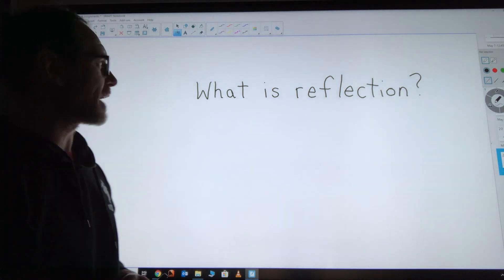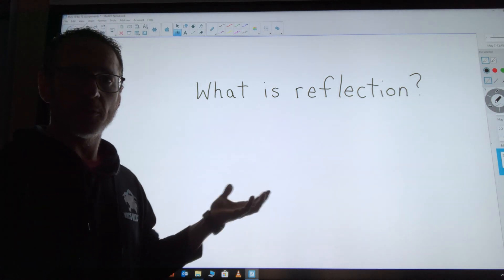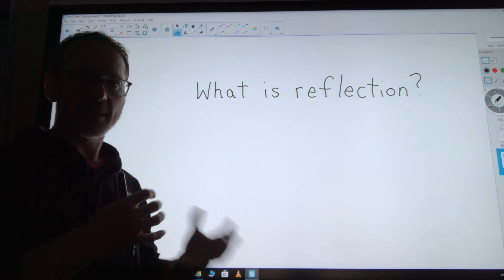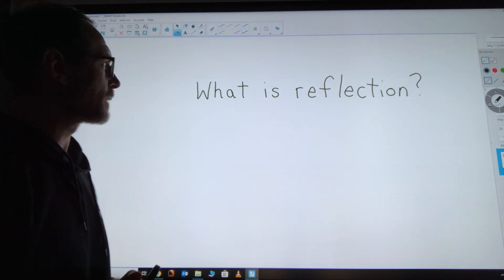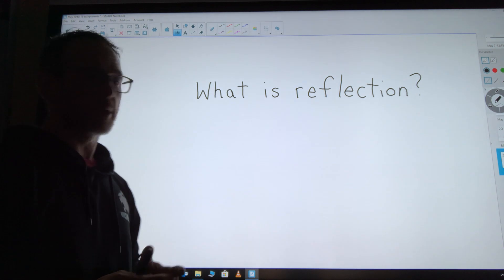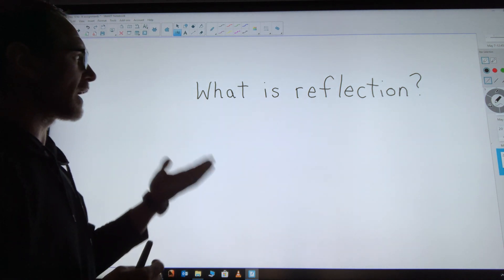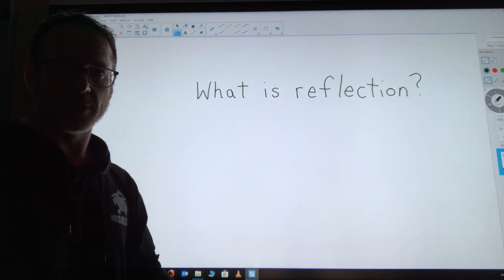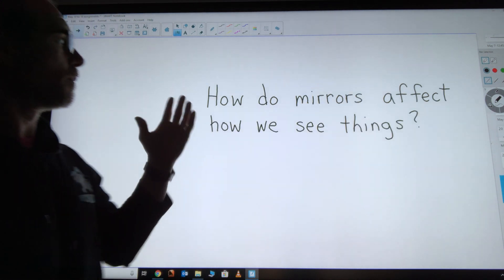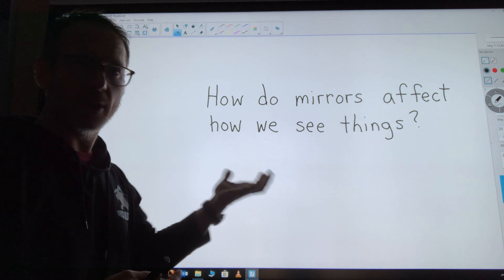Hi guys, our last video for science this week. I just want to review reflection and its properties and rules. So our first thing we looked at this week was what is reflection. Very important that you know that reflection is when light bounces off of something. With mirrors, reflection becomes really important.